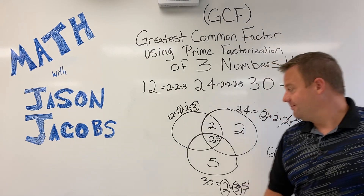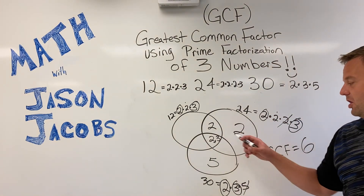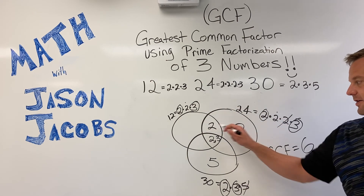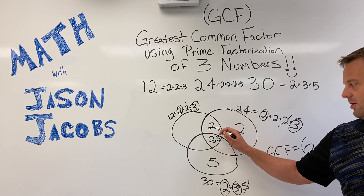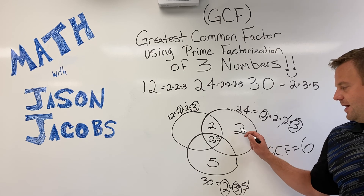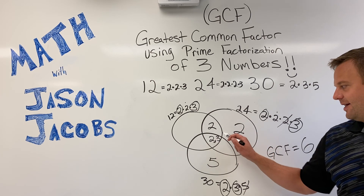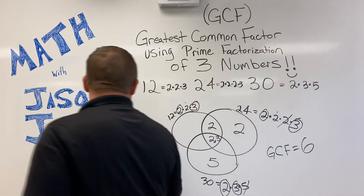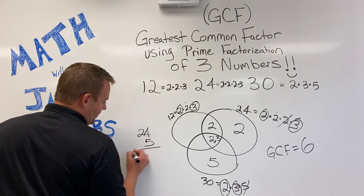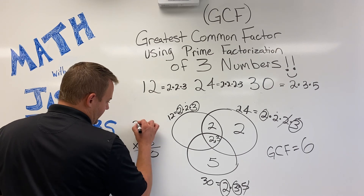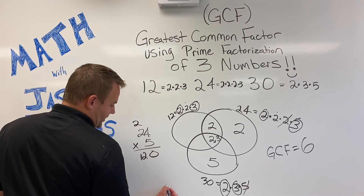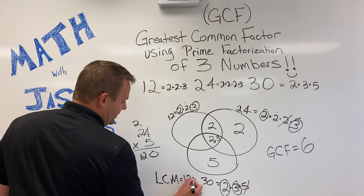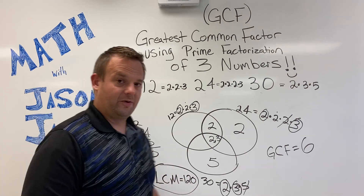Now, if you want to find the least common multiple, all you have to do is multiply all of the numbers in your Venn diagram together. So two times two is four, times two is eight, times three is 24, and 24 times five gives you the least common multiple, which is 120. So the least common multiple is 120 — that's a little bonus for you.